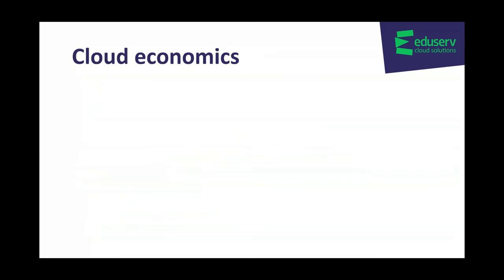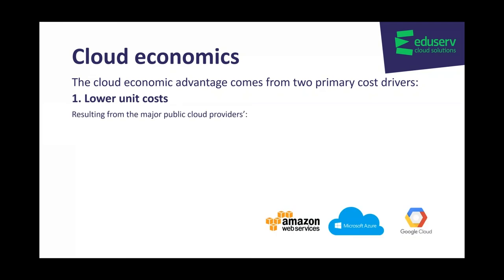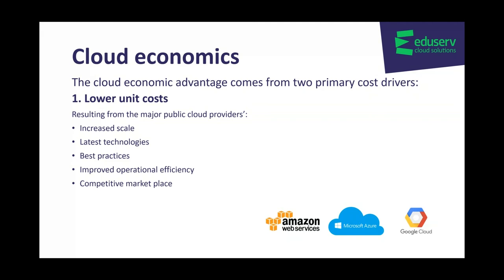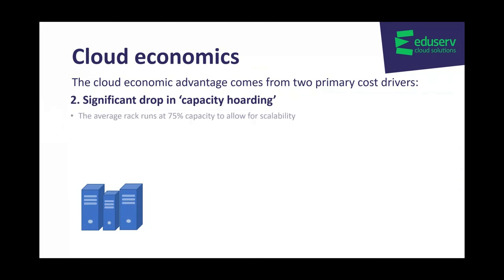The cloud economics has two main primary cost drivers. You benefit from lower unit costs as a result of the major public cloud providers having increased scale, the latest technology, best practices, improved operational efficiency, and it's a competitive market — they're all out there to try to win your business. The second cloud economic advantage is a significant drop in capacity hoarding. When you're running your own data center, the average rack runs at 75% capacity to allow for scalability, so the other 25% is wasted. In public cloud, you match cost with usage — you just pay for what you use.